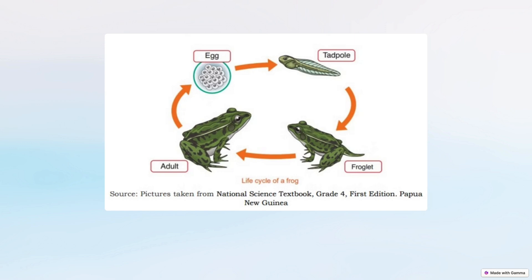The adult frog lays eggs, beginning a new life cycle. As seen in the illustration, the life cycle of a frog goes from egg, to tadpole, to froglet, and finally to adult frog.